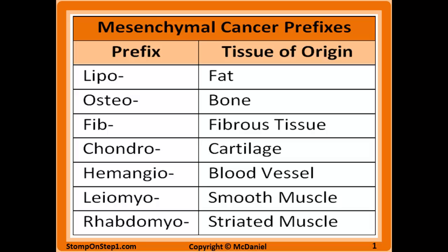Here are a few examples of the mesenchymal cancer prefixes. Lipo indicates fat — liposuction is an easy way to think of it. Osteo means bone. Fibro means some kind of fibrous tissue. Chondro means cartilage. Hemangio indicates blood vessels — think of heme and blood. Leiomyo means smooth muscle. Rhabdomyo means striated muscle.